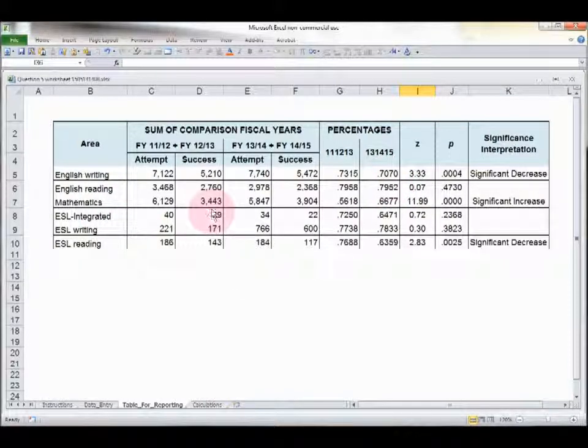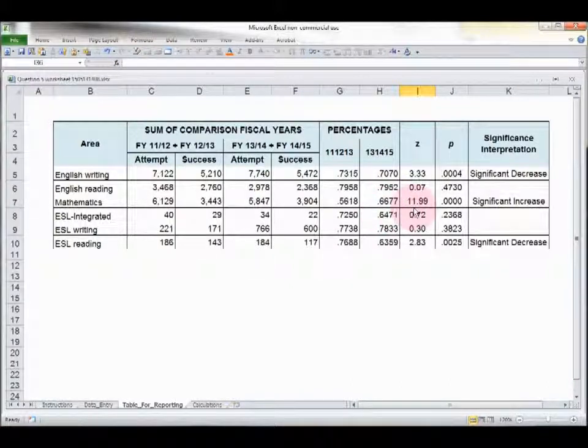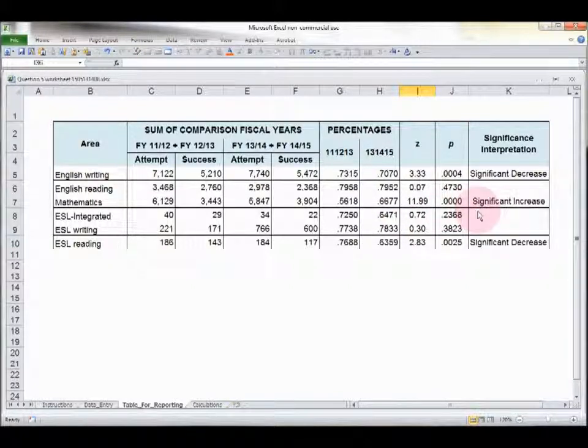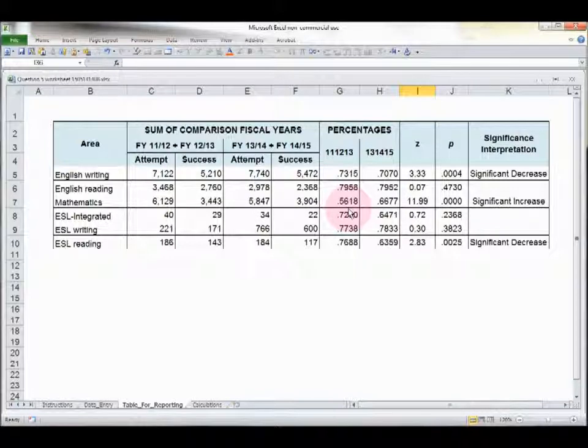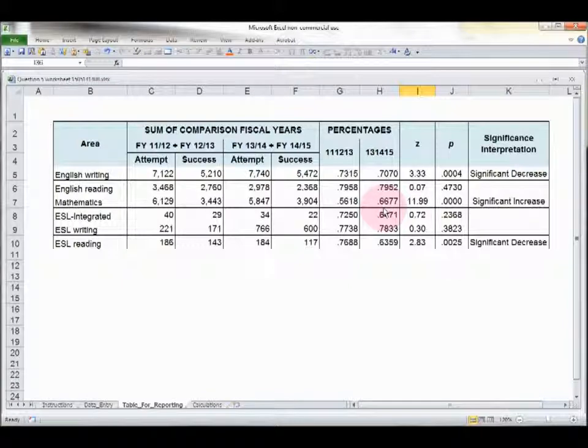Mathematics: 34.43 divided into 61.29, 56.18. 39.04 into 58.47, 66.77. Look at that, a very significant z, a very significant p-level, and interpretation of significant increase. So in the further past, the success rate was 56%. More recently, it's 66, almost 67%. Again, you'd want to cover that in your plan. Tell us what's working and how you plan to continue to do that.